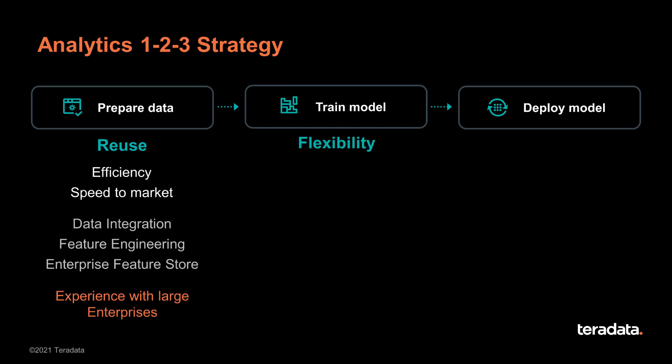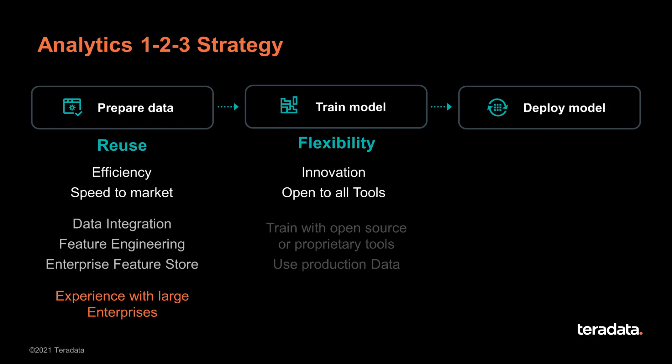In the second pillar, model training, we're all about flexibility — using the tool that you need to use. This gives you innovation, because who can tell what will be the next big thing in data science tools in the next year or two? Things are changing all the time and we can't lock ourselves down to a specific set of technologies or libraries. We're open to all tools, meaning you can train with open source or proprietary tools once data is prepared correctly, and you can use production data rather than silos of data in other tools.